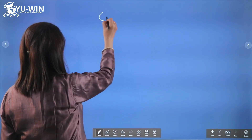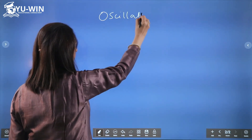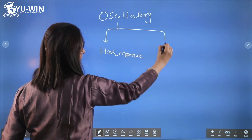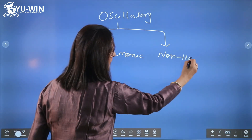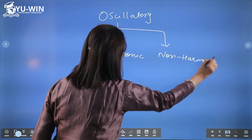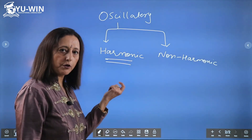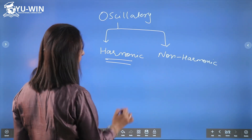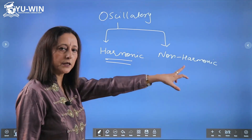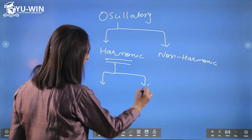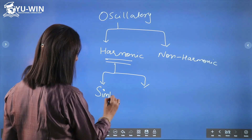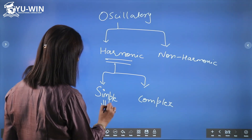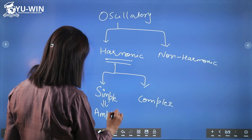Oscillatory motion can be further of two types: harmonic and non-harmonic. Harmonic motion is motion which can be expressed in terms of harmonic functions — sine and cosine. If I can represent the motion of an object by means of sine or cosine function, it will be harmonic motion. Non-harmonic motion cannot be expressed in terms of sine or cosine. Harmonic motion can be further categorized into simple harmonic motion and complex harmonic motion. Simple harmonic motion is one whose amplitude of motion is constant.